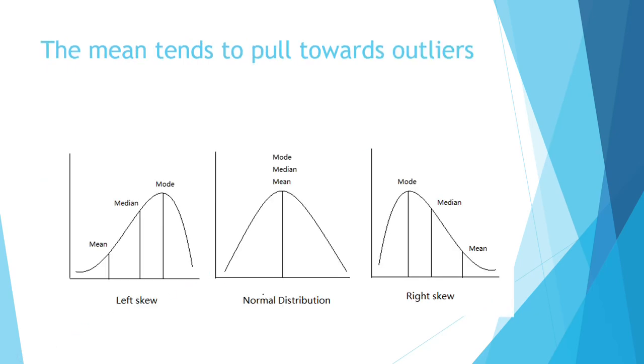If our distribution is normal or bell-shaped, the mean, median, and mode tend to be in the center of the distribution. If there is an outlier that is extremely small in comparison to the rest of the data, the mean tends to pull towards that direction.